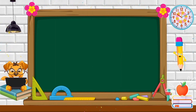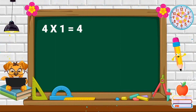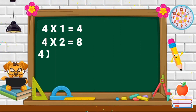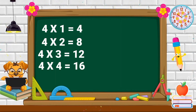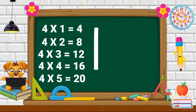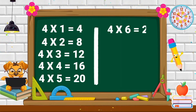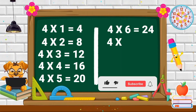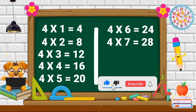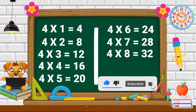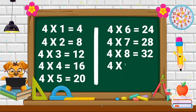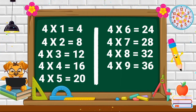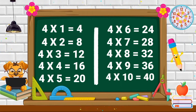Repeat again. Four ones are four. Four fives are twenty. Four sevens are twenty-eight. Four eights are thirty-two. Four nines are thirty-six. Four tens are forty.